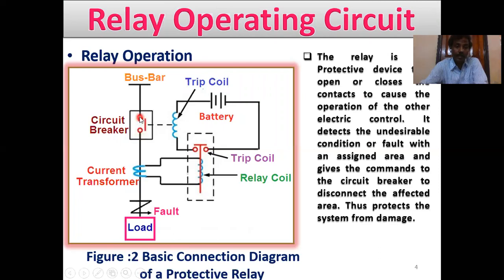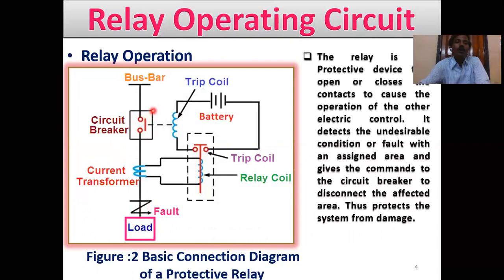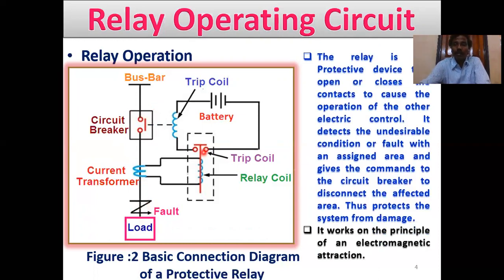The circuit breaker has a fixed contact and a moving contact. Under normal conditions, the CT is in the off position, but under faulty conditions the CT is energized. The relay coil is also energized and the plunger moves downward, causing the moving contact to open and protect the load. This is an intentional non-linear system — this non-linear relay is intentionally introduced into the system for better performance or higher efficiency. It works on the principle of electromagnetic action.